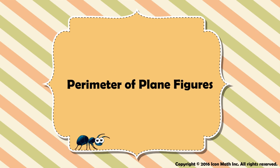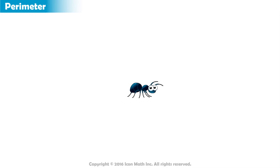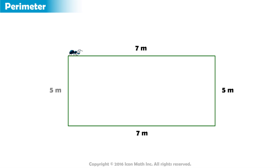Perimeter of Plane Figures. Imagine a small ant standing on the top left corner of this rectangle. The lengths of the sides of the rectangle are labeled, as you can see.